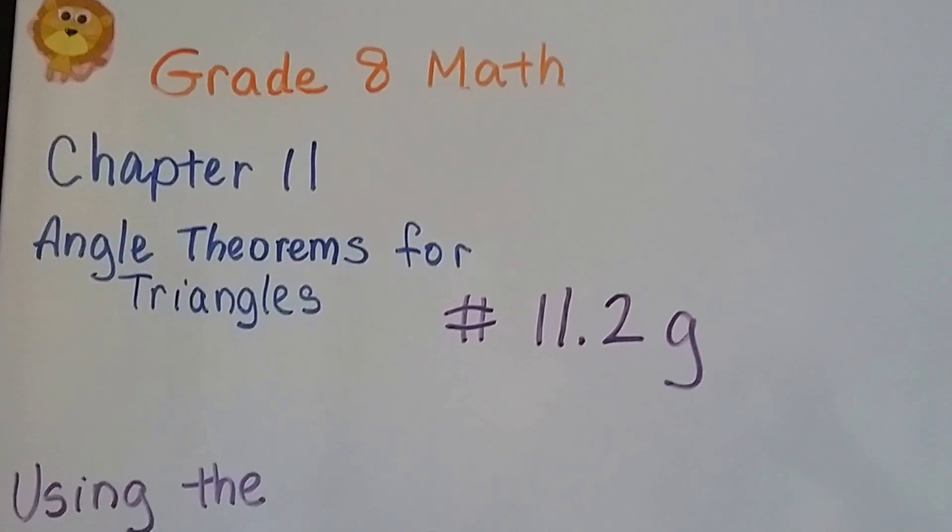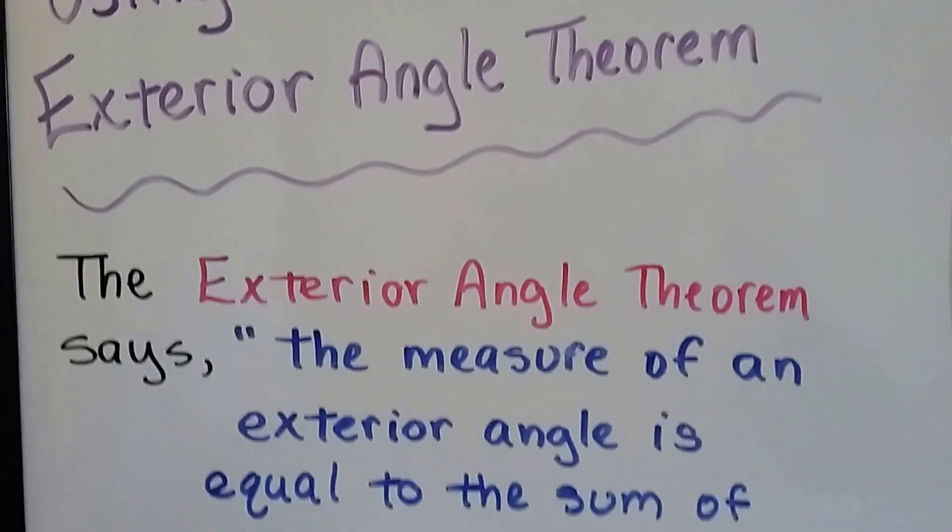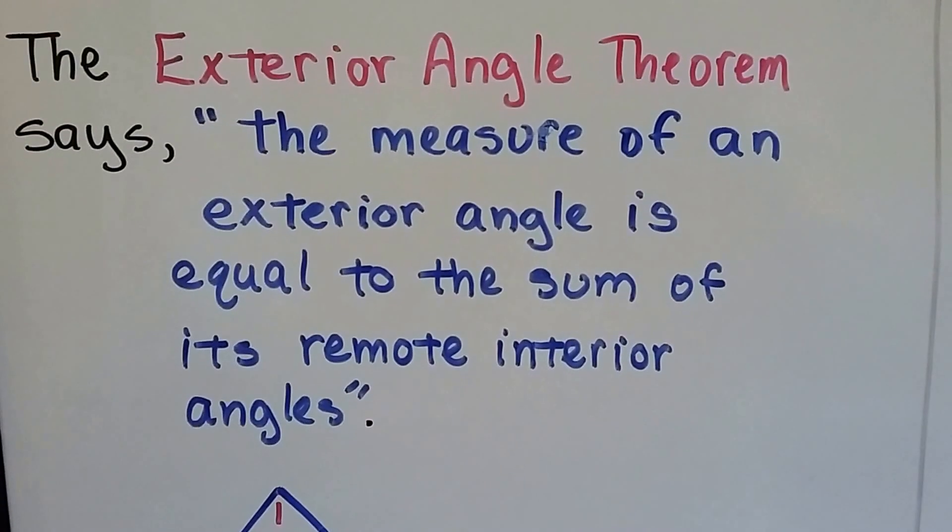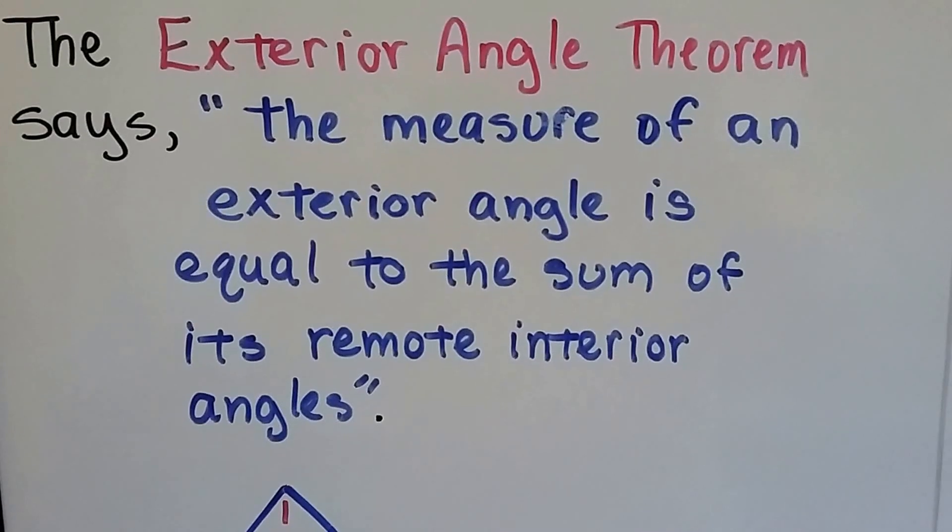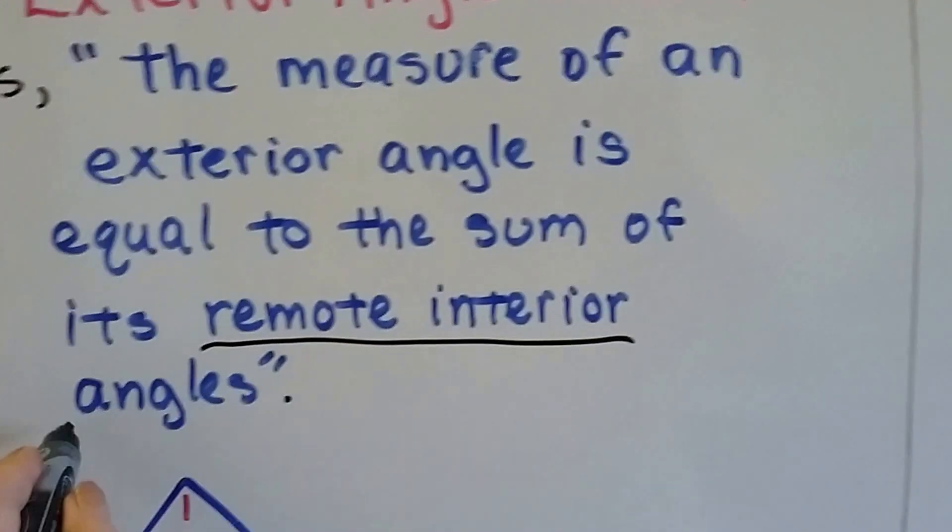Grade 8 math number 11.2g. We're going to talk about using the exterior angle theorem. We talked about this a little bit in the last video. So the exterior angle theorem says the measure of an exterior angle is equal to the sum of its remote interior angles. We talked about this too, remote interior angles.